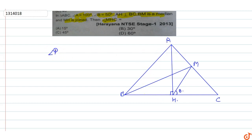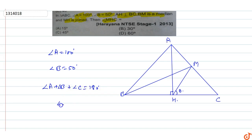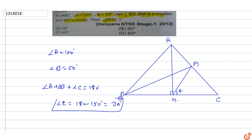Angle A is equal to 100 degrees, angle B is equal to 50 degrees. The sum of angles of a triangle is 180 degrees, so angle C equals 180 minus (A plus B). A plus B is 150 degrees, so angle C equals 180 minus 150, which is 30 degrees.